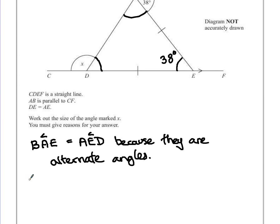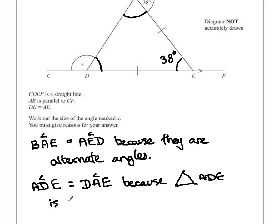So we have angle ADE is equal to angle DAE, because the triangle ADE is isosceles.